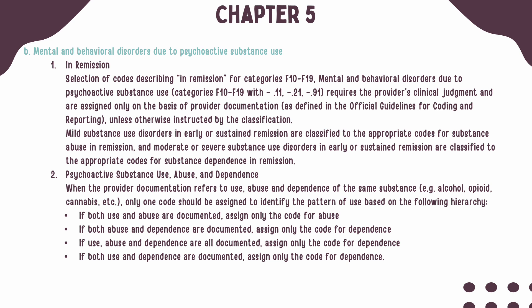When a provider refers to use and abuse of the same substance, you should assign only a single code to identify the pattern of use. This is based on a hierarchy with dependence being the highest, abuse in the middle, and use being the lowest. If use and abuse are documented, assign the code for abuse. If abuse and dependence are documented, only code for dependence. If all three — use, abuse, and dependence — are documented, assign only the code for dependence. If use and dependence are documented, only the code for dependence should be assigned. Dependence trumps both use and abuse, and abuse trumps use.